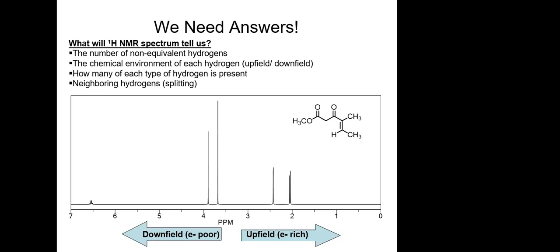The third thing NMR tells us is how many of each type of hydrogen is present. We integrate the signal — for example, a CH3 group should integrate for three protons, and a single hydrogen should integrate for one proton. The fourth thing is the neighboring hydrogens — what's next door to what, and how do you connect the carbons to get the signals you see with the proper multiplicity.